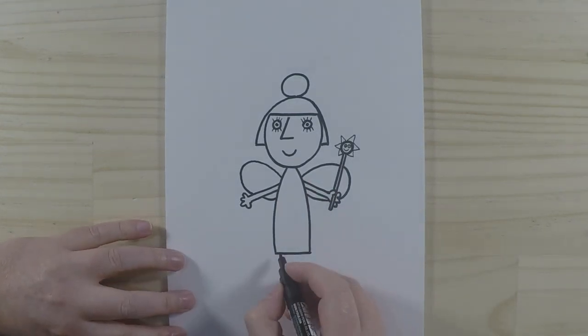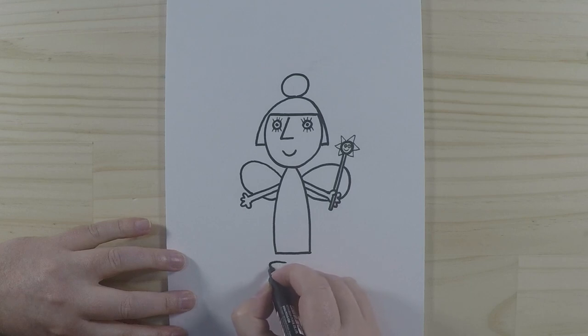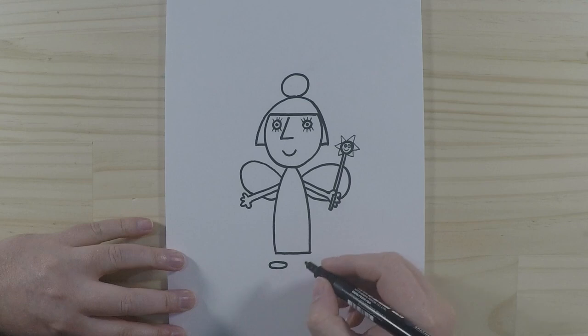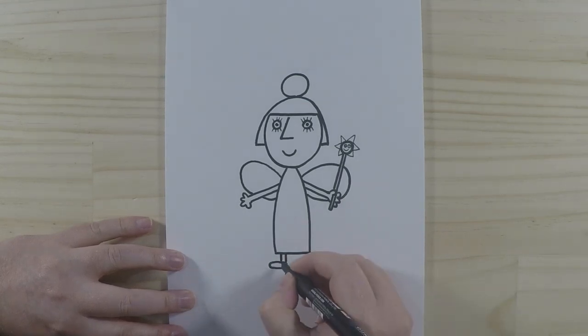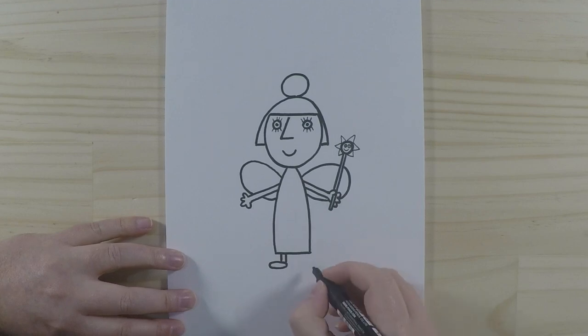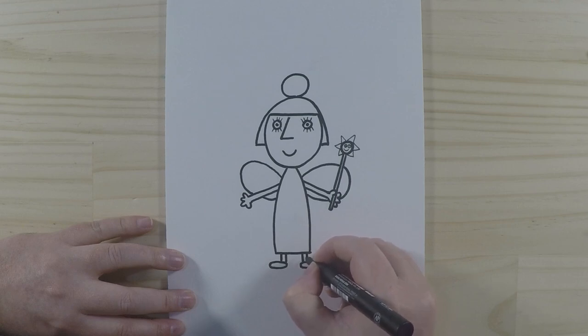Alright, so let's draw her feet. Nice and easy shape—it's a bit of an oval but quite flat. So we'll draw her feet there, and then two little lines here that make up her legs and join up with her dress. And the same on the other side, just like that.